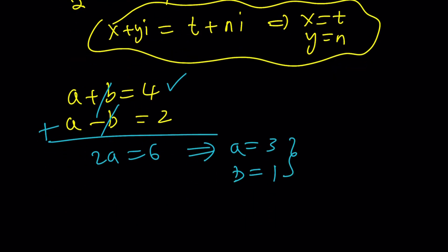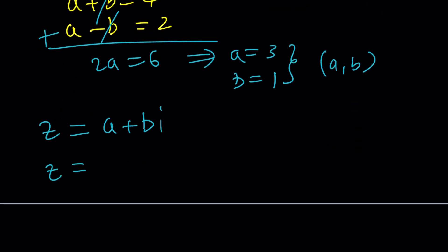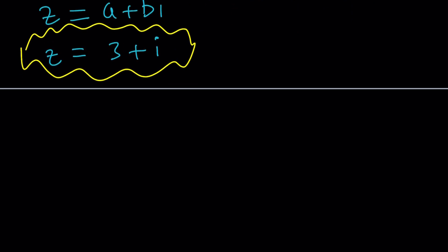So we got the a and b values, and there's only one solution as an ordered pair, a comma b, so this gives us a unique solution for our complex number z. But how do you find z from here? Remember, z was originally a plus bi, and since a and b values are known, we can write the z as 3 plus 1i, or just 3 plus i. So that's our complex number. You can definitely plug it in and check your work, which is not always necessary, but it's good practice. All right?